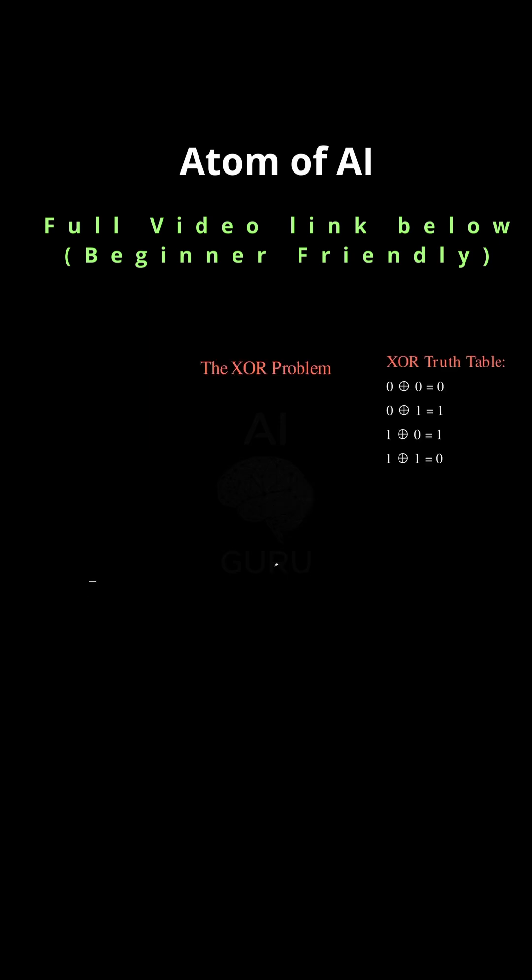A digital switch making a linear decision. And that, right there, that was its crippling weakness. The failure that basically stopped the entire field of neural networks dead in its tracks for years. The infamous XOR problem.